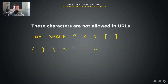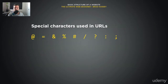These characters are not allowed in URLs: tabs, spaces, brackets, curly braces, backslashes, and things like that. Some special characters are allowed in URLs, like the at sign, equals, ampersand, percent, pound, forward slash, question mark, colon, and semicolon.